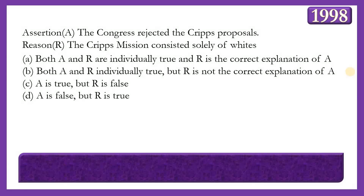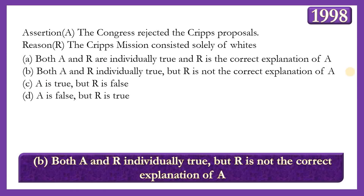Next assertion-reason question. Assertion: The Congress rejected the Cripps proposals. Reason: The Cripps mission consisted solely of voids. The answer is option B — both A and R are individually true but R is not the correct explanation of A. The Cripps proposal was rejected because Congress was demanding complete independence, whereas the Cripps proposal offered only dominion status for India.